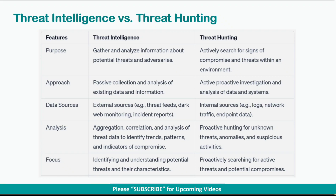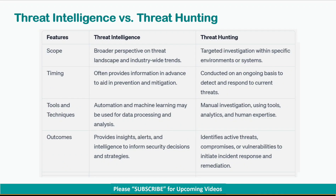Threat intelligence focuses on identifying and understanding potential threats and their characteristics. Whereas, threat hunting focuses on proactively searching for active threats and potential compromises. Threat intelligence offers a broader perspective on the threat landscape and industry-wide trends, while threat hunting helps with targeted investigation within specific environments or systems.